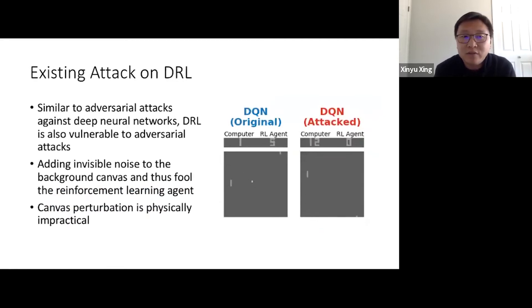Similar to adversarial attacks against deep neural networks, deep reinforcement learning is also vulnerable to adversarial attacks. To attack a deep reinforcement learning network, attackers could simply add invisible noise to the background canvas and therefore fool the reinforcement agent accordingly.